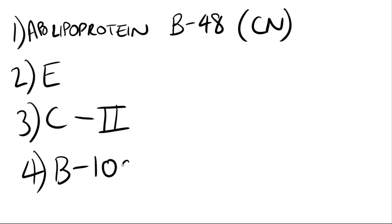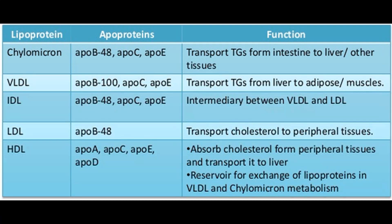ApoB100 is carried by immature VLDL and becomes mature only after the addition of apolipoprotein E. The functions are important to know: chylomicrons transport TAGs from the intestine to the liver or other tissues; VLDL transports TAGs from the liver to adipose tissue or muscles; IDL is a relay station between VLDL and LDL; LDL transports cholesterol to peripheral tissues; and HDL transports cholesterol from peripheral tissues back to the liver.